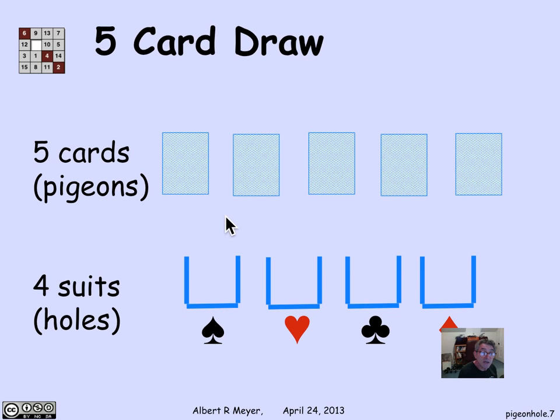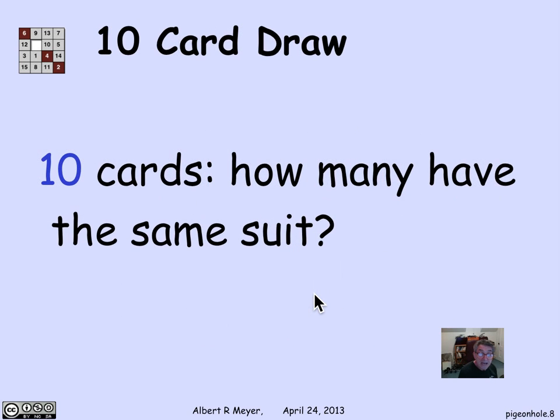So if you're going to assign a pigeon to a hole, again, the pigeons are going to have to crowd up. There are going to have to be at least two pigeons in the same hole, at least two cards of the same suit, maybe more.